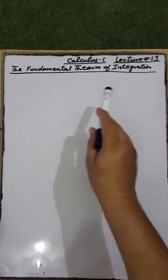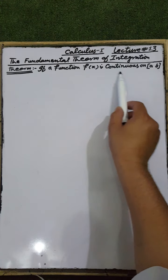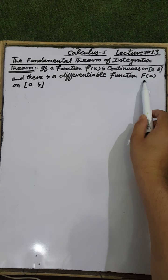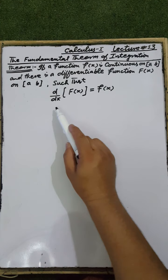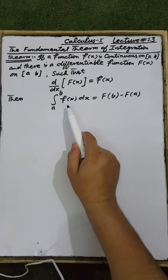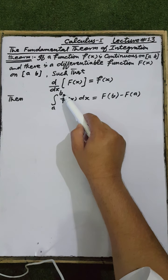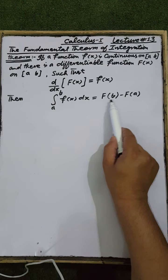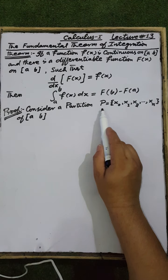Our next topic is the Fundamental Theorem of Integration. The statement of this theorem: if a function f(x) is continuous on the closed interval [a, b], and there is a differentiable function F(x) on the same closed interval [a, b] such that the derivative of F(x) with respect to x equals f(x), then the integral of f(x) dx from a to b is equal to F(b) minus F(a).